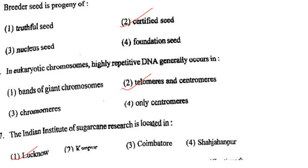Next one: In eukaryotic chromosomes, highly repetitive DNA generally occurs in option 1, bands of giant chromosomes; option 2, telomeres and centromeres; option 3, chromomeres; option 4, only centromeres. Answer is option 2: telomeres and centromeres.